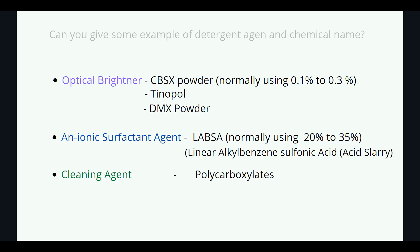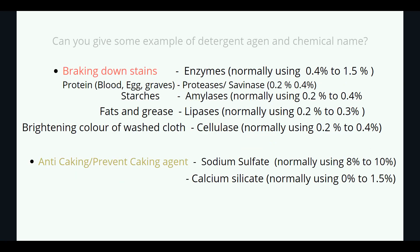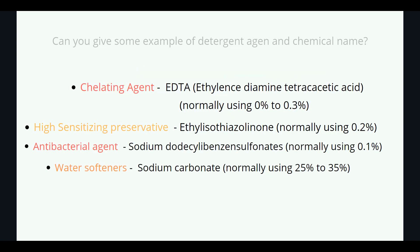Enzyme agents for breaking down stains, normally used 0.4% to 1.5%. Protein enzyme (protease): normally 0.2% to 0.4%. Starch enzyme (amylase): normally used 0.2% to 0.4%. Fats and grease enzyme (lipase): normally used 0.2% to 0.3%. Brightening color of washcloth enzyme (cellulase): normally used 0.2% to 0.4%. Anti-caking or prevent caking agents: sodium sulfate, normally 8% to 10%; calcium silicate, normally 0% to 1.5%. Chelating agent: EDTA (ethylene diamine tetraacetic acid), normally used 0% to 0.3%.